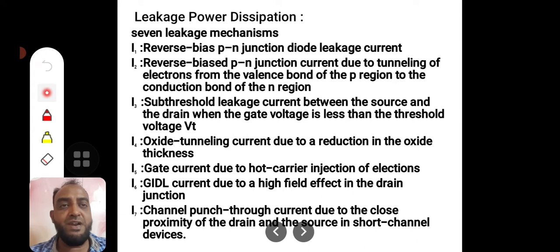For example, I1 is reverse bias PN junction diode leakage current. And I2 is reverse bias PN junction current due to tunneling of electrons from the valence band of the P region to the conduction band of the N region, and so on. There are seven different currents.